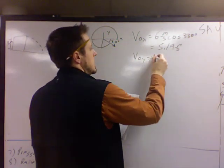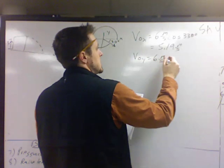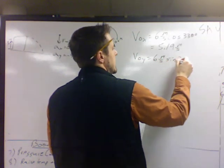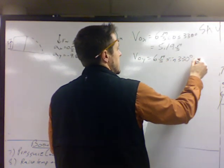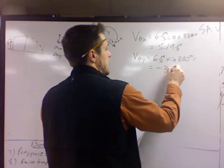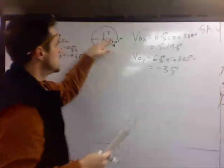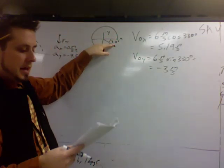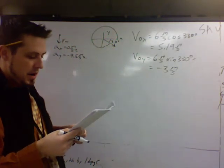Initial velocity in the y, the entire thing, 6 meters per second, times the sine of 330 degrees. And we get the y part as negative 3 meters per second. Does the negative make sense? Sure. It's being thrown to the right and down.